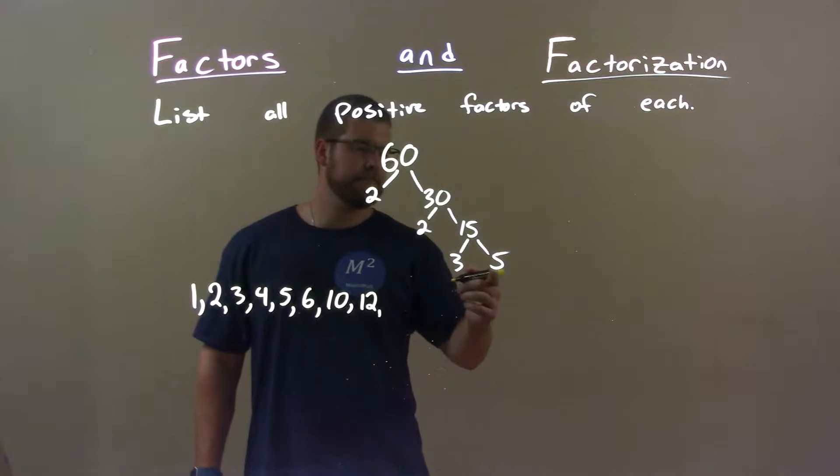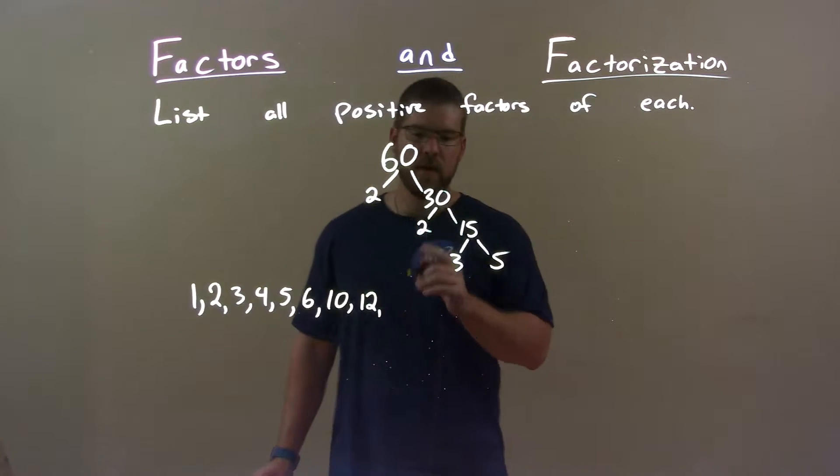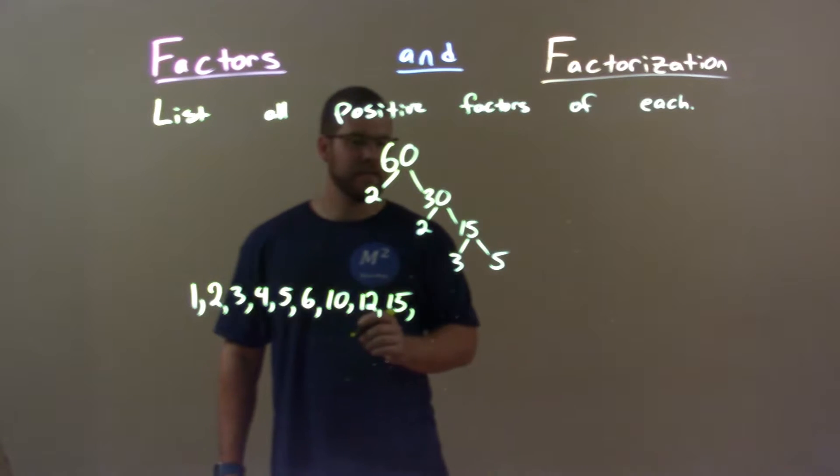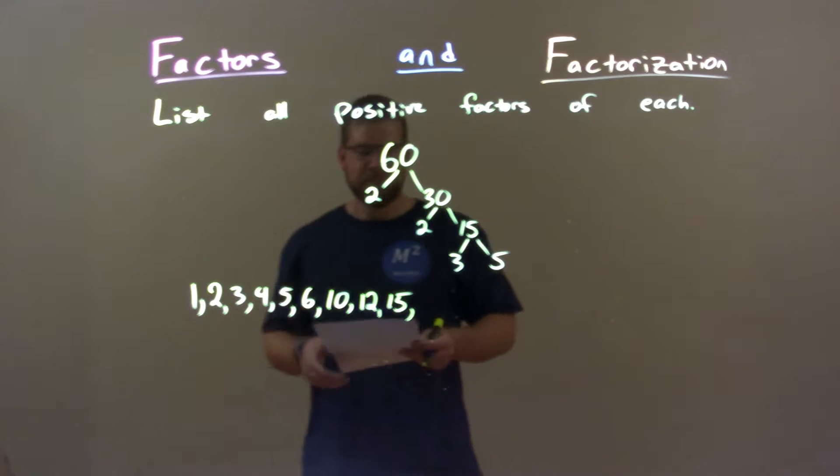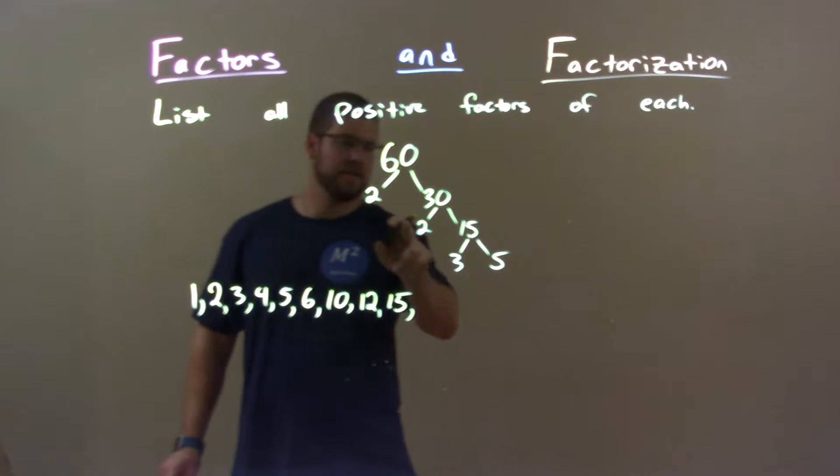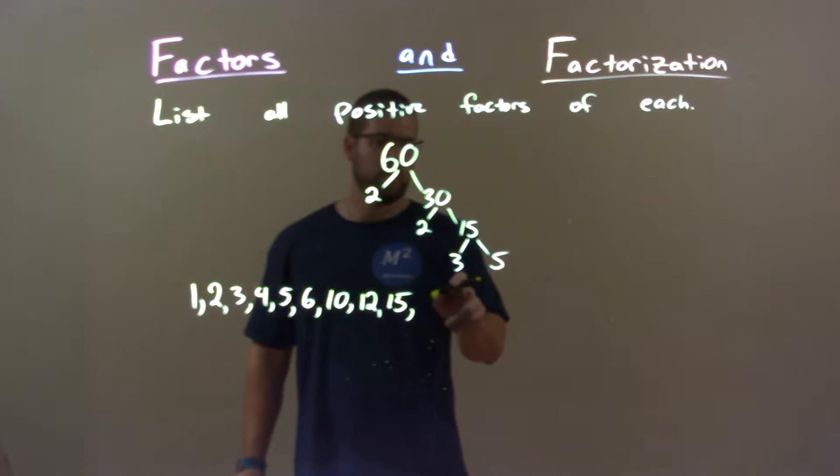What about 13? Nope. 14? Nope. 15. 3 times 5 is 15. Great. 16? What about 16 here? 16, nothing multiplies. No. 17? No. 18? Don't see it. 19? No. But 20. 2 times 5 is 10. Times 2 is 20.